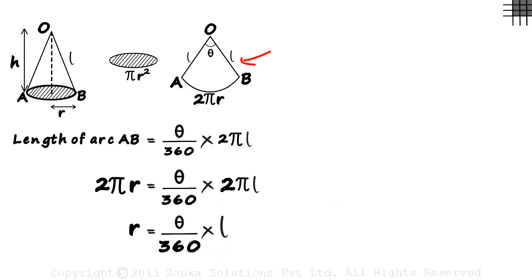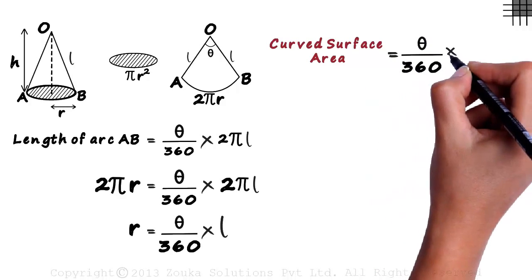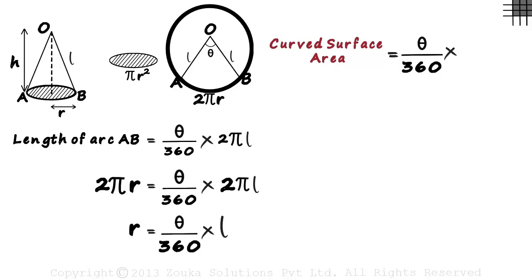The area of this sector will be the curved surface area of this cone. The area of this sector will equal theta by 360 multiplied by the area of the circle with O, A and O, B as the radius. And that will be pi L squared as L is the radius of this circle.